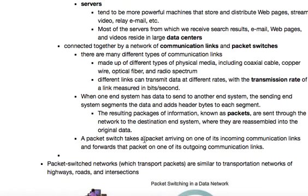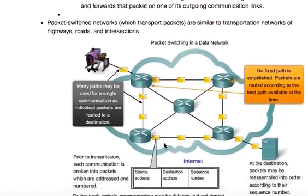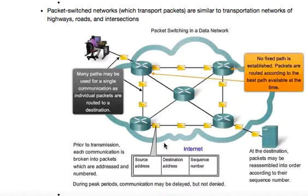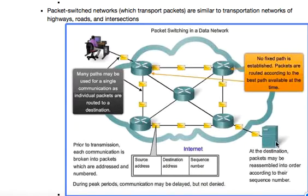A packet switch takes a packet arriving on one of its incoming communication links and then forwards that packet to one of its outgoing links. Packet switched networks, which transport packets, are similar to roads and highways and intersections. There are many ways for a single packet to be routed to a destination — maybe your email is going here as a final destination, but there's no fixed path. Packets are routed efficiently, broken up, and then reassembled at the destination.